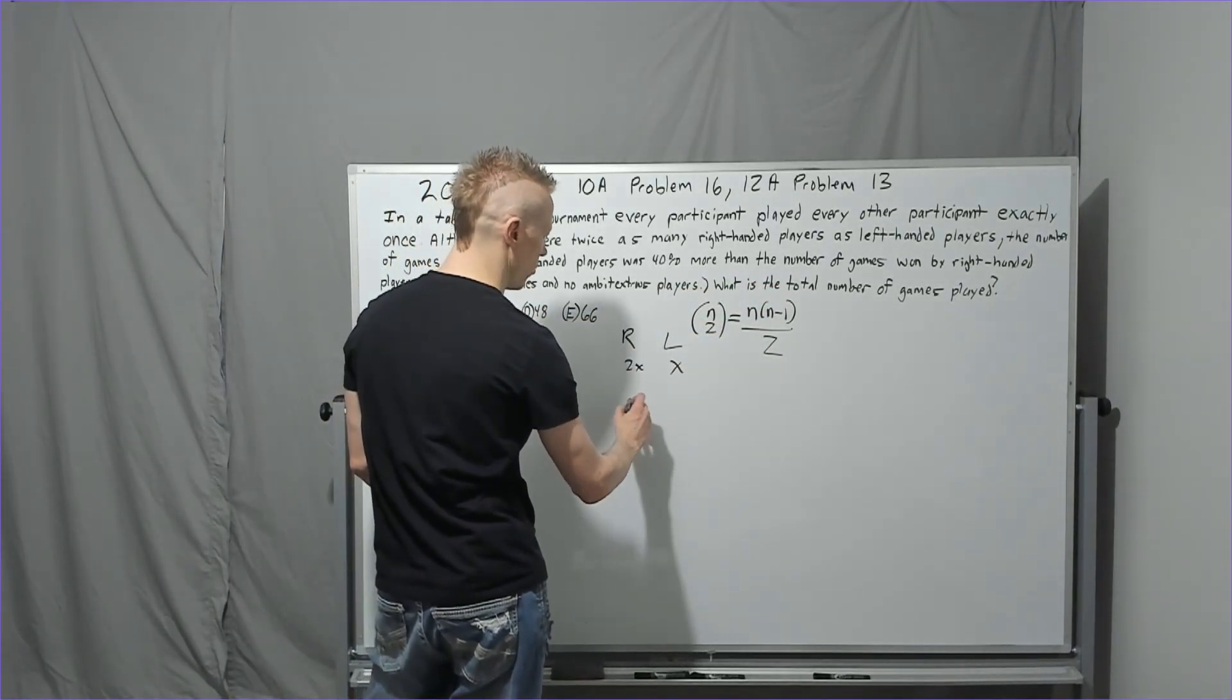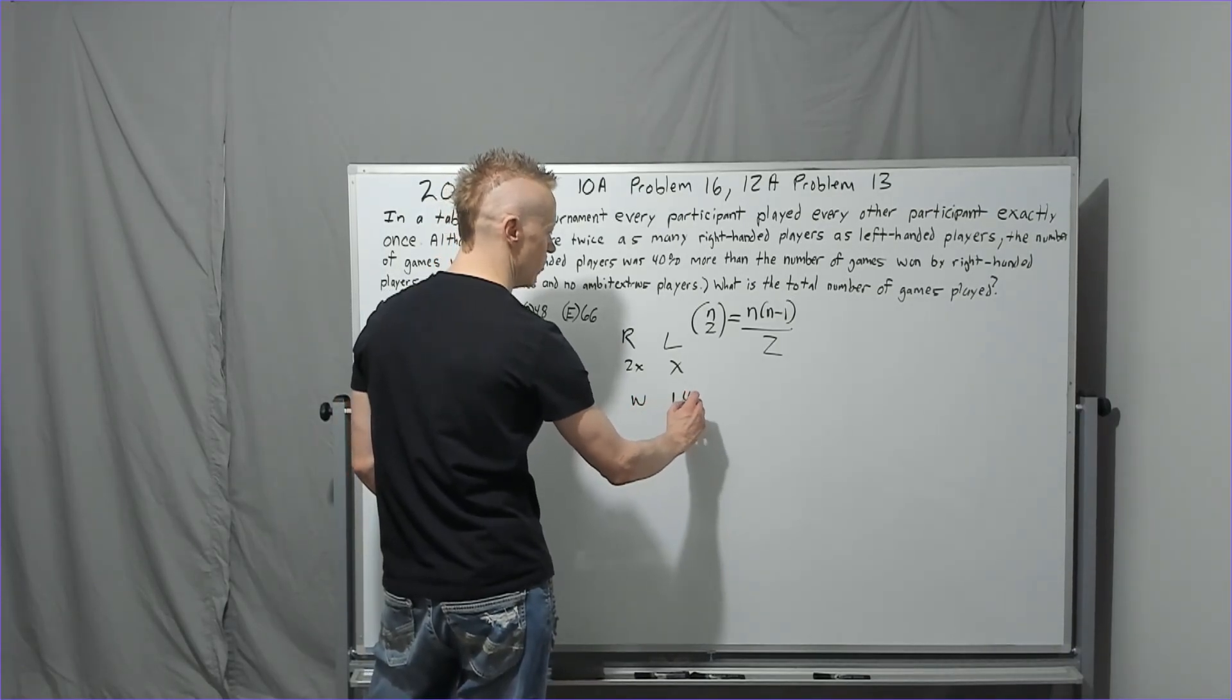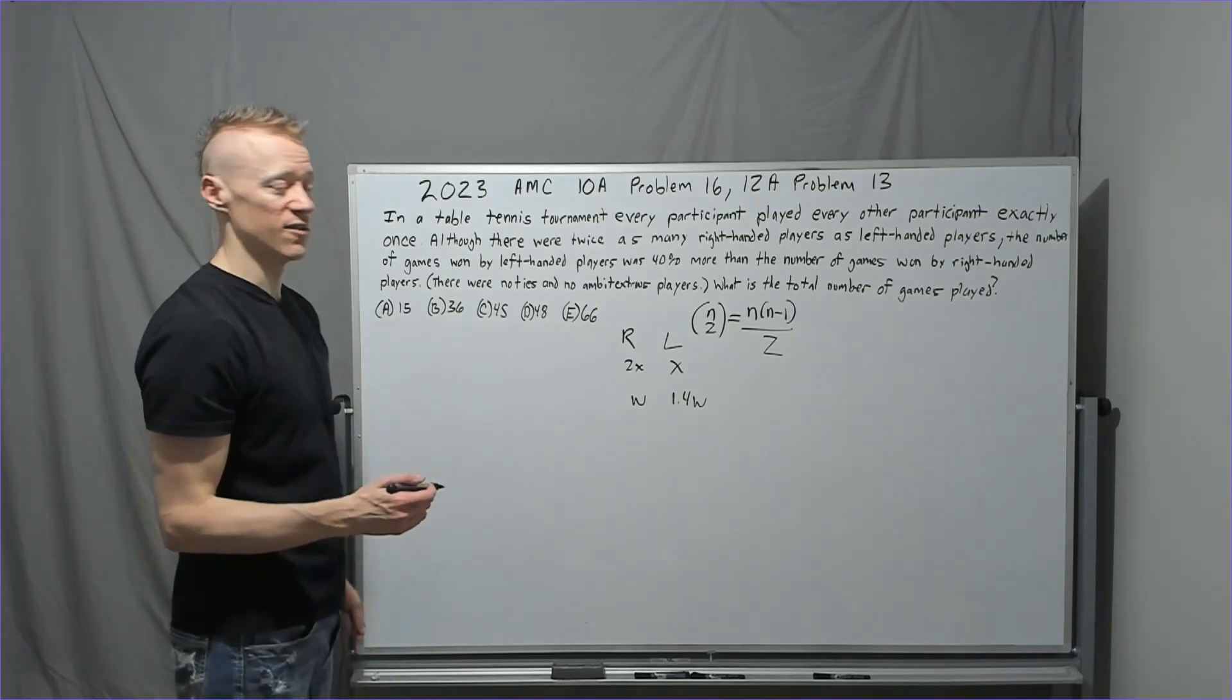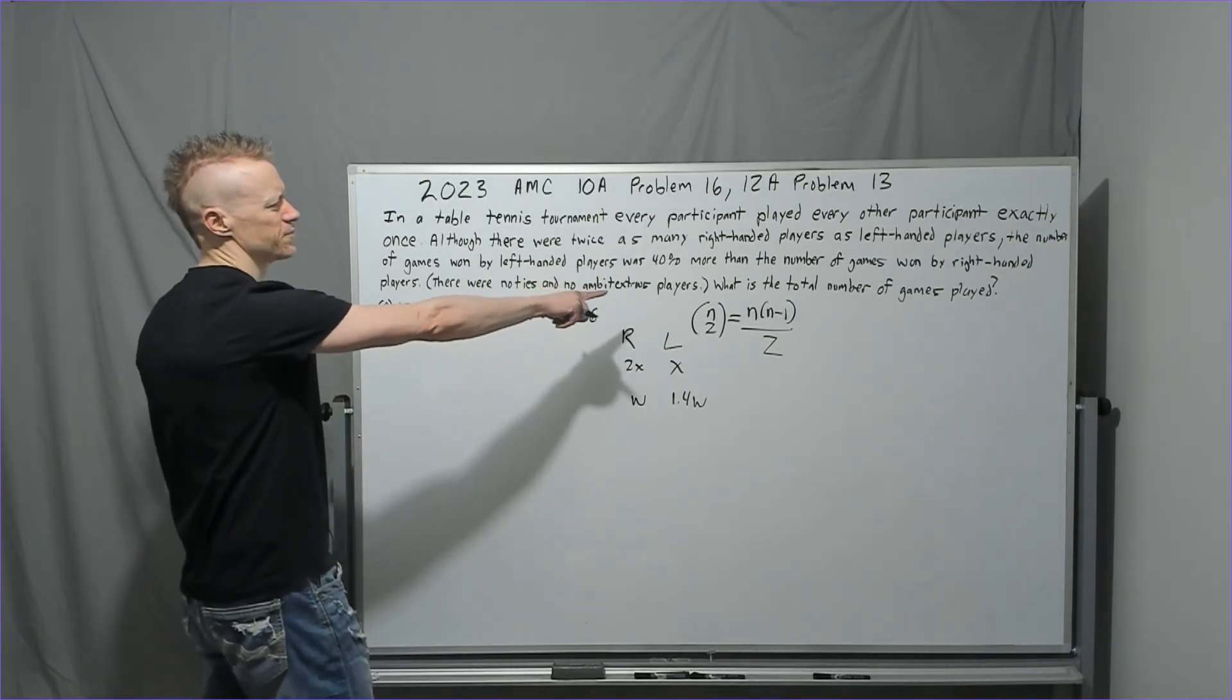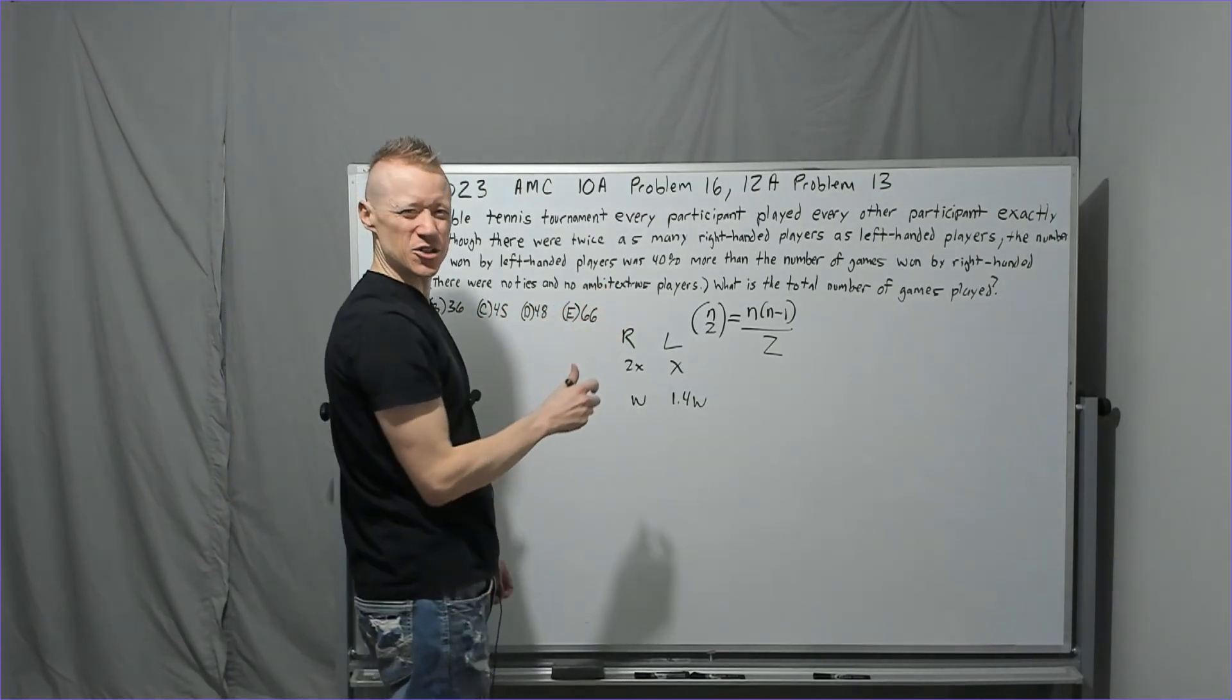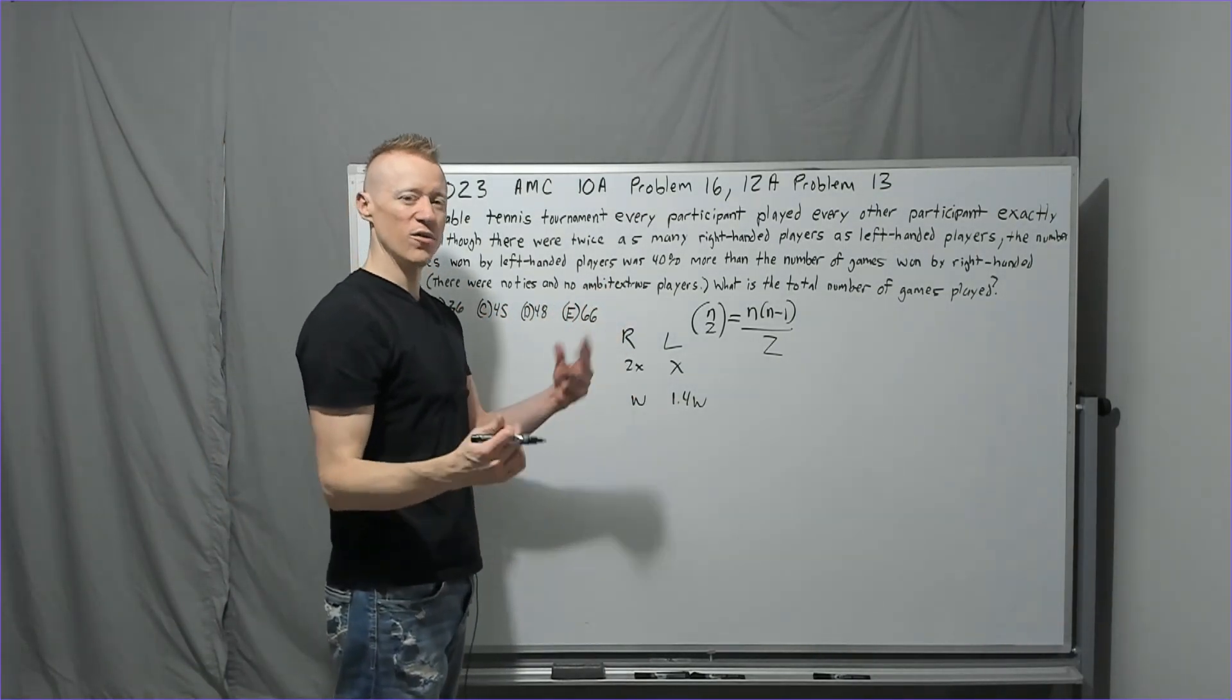So their wins, let's say that they win, they're going to win 1.4 times whatever games the right-handed players won. There were no ties and no ambidextrous players using one or the other hand.